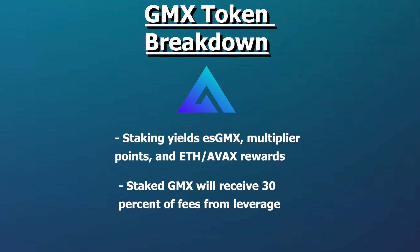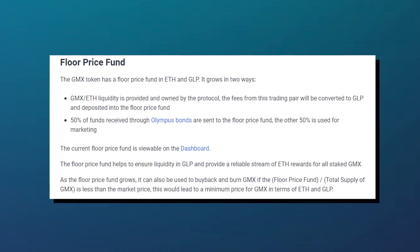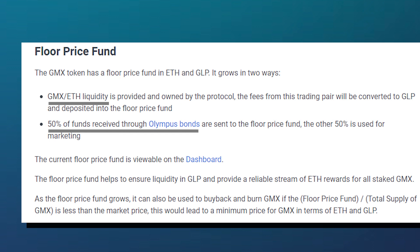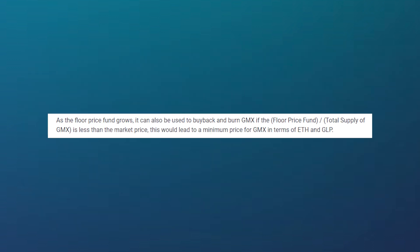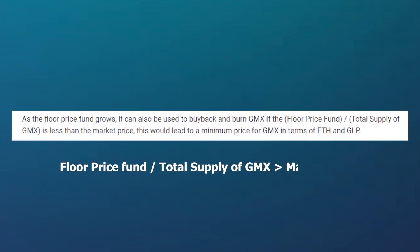The GMX token has a floor price fund, which ensures that the token will always have some value. This fund consists of OHM bonds, as well as fees from the native GMX/ETH liquidity pool, which ensures that the fund slowly grows in value. The protocol automatically converts fees from GMX/ETH into GLP, ensuring consistency of value for the GMX pool and liquidity for the GLP token. This fund also has a buyback and burn mechanism if the floor price fund divided by the total supply of GMX is less than the market price.